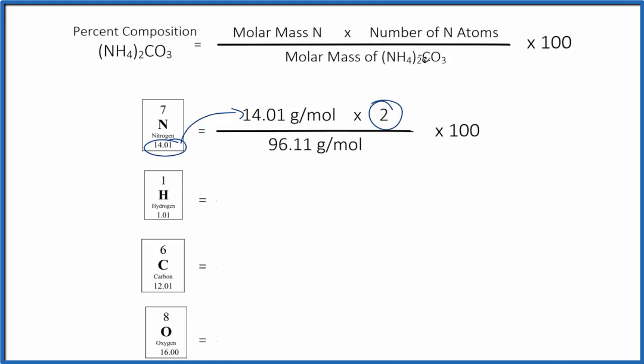and then we divide the whole thing by the molar mass of ammonium carbonate. If you need help with that, there's a link at the end of this video. That's 96.11 grams per mole. So you note we have grams per mole on the top and the bottom. They're going to cancel out.